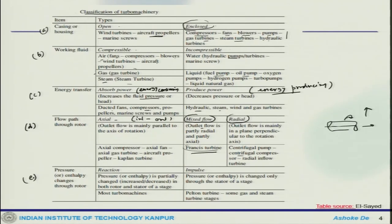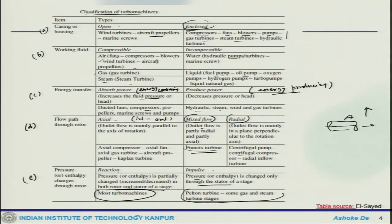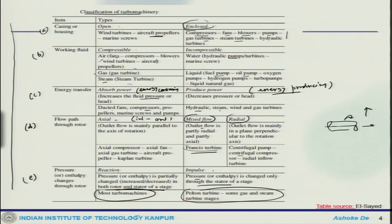Lastly, classification by pressure or enthalpy change through the rotor: reaction machines, where pressure or enthalpy is partially changed in both the rotor and stator of a stage — most turbo machines fall under this category; and impulse machines, where pressure or enthalpy changes only through the stator, such as Pelton turbines and some gas or steam turbines. Our discussions will mostly involve the reaction type.